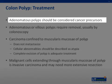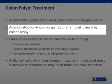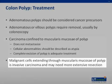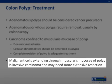Adenomatous polyps should be considered precursors of cancer. The treatment of an adenomatous or villous polyp is removal, usually by colonoscopy. Carcinoma confined to the muscularis mucosa of the polyp does not metastasize, and the cellular abnormalities should be described as atypia. Complete excision of this type of polyp is adequate treatment. However, invasive carcinoma describes a situation in which malignant cells have extended through the muscularis mucosa of the polyp, whether it is a lesion on a stalk or a sessile lesion. If invasive carcinoma penetrates the muscularis mucosa, consideration of the risk for lymph node metastasis and local recurrence is required to determine whether or not a more extensive resection is required.